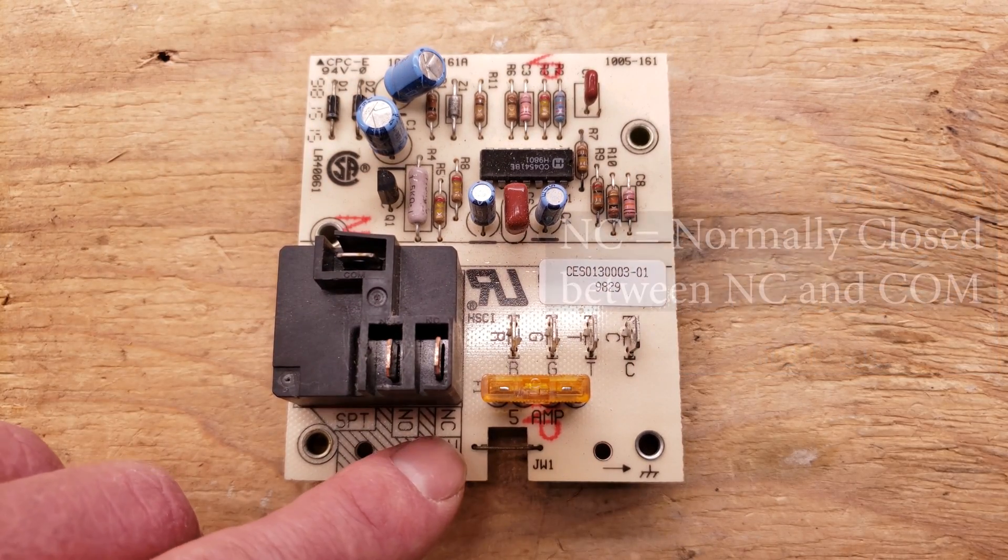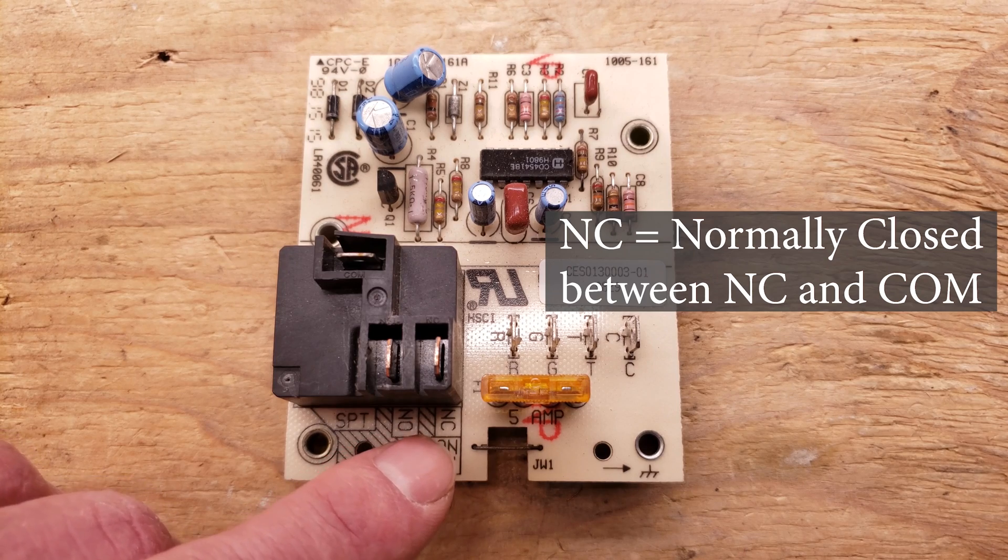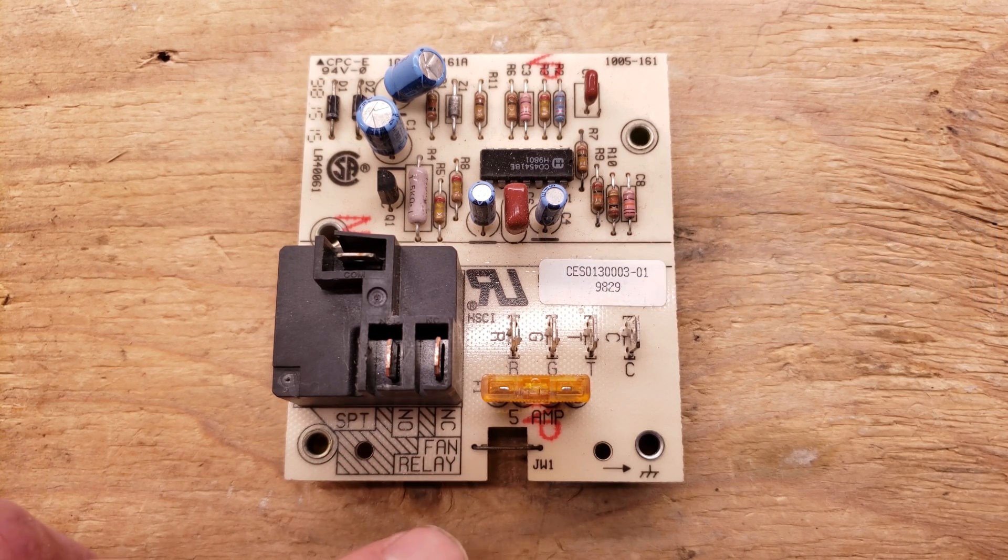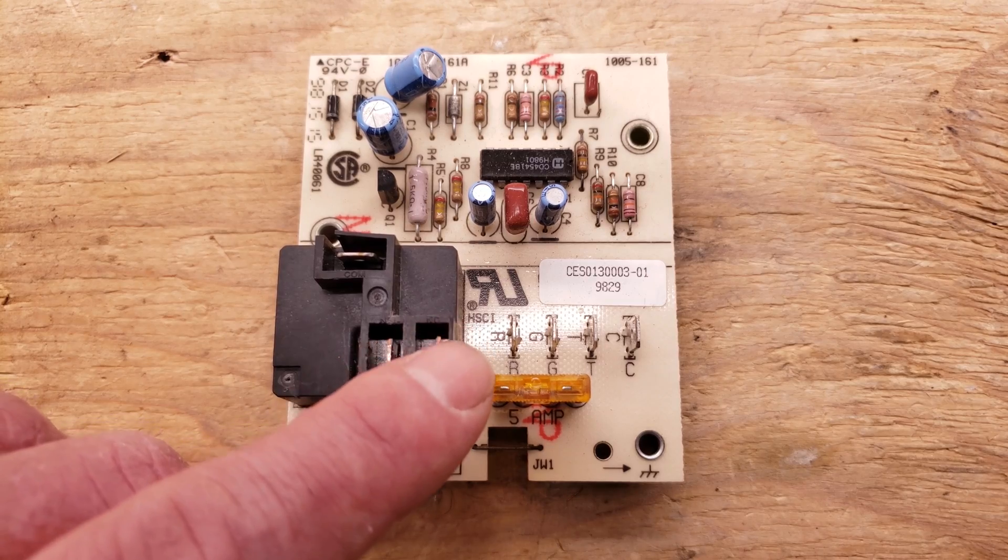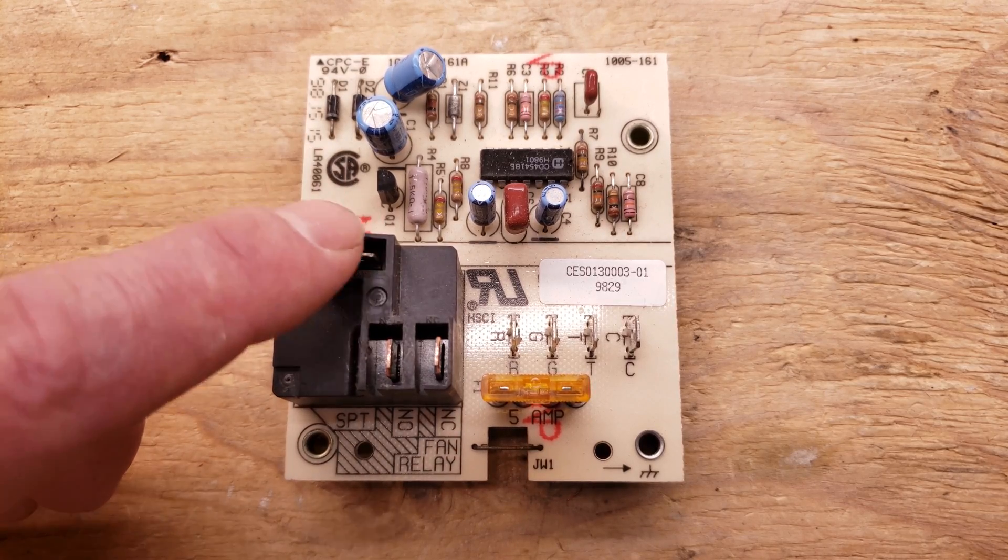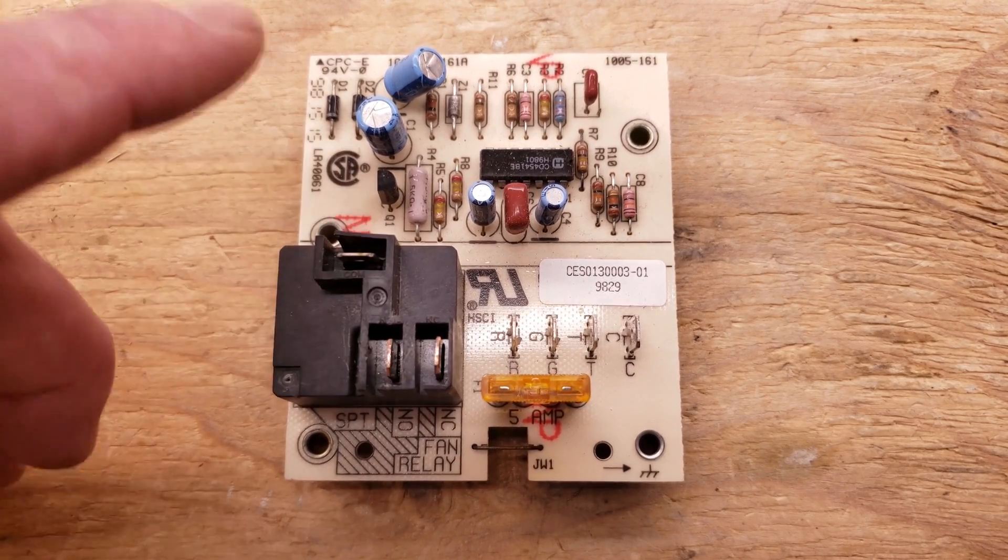This NC terminal is only used if you have electric strip heating, and 120 volts would have to pass through a sequencer first before it gets over to this connection. Then it would connect over to your blower motor connection on the common in order to power your blower motor.